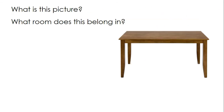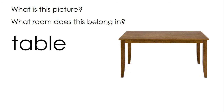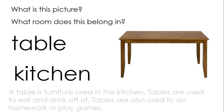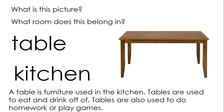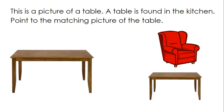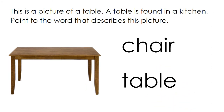What is this picture? It's a table. And what room does this belong in? It belongs in the kitchen. A table is furniture used in the kitchen. Tables are used to eat and drink off of. Tables are also used to do homework or play games. This is a picture of a table. A table is found in the kitchen. Point to the matching picture of the table. Great, you made a match. Point to the word that describes this picture. Table.